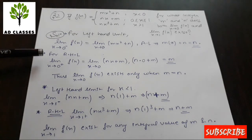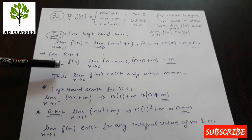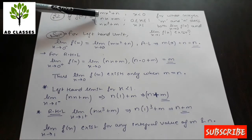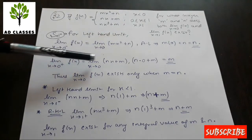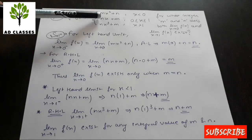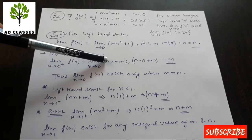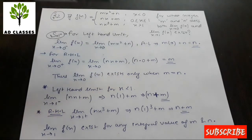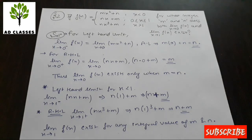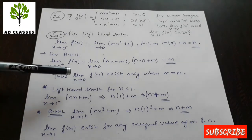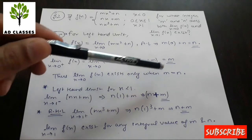For the Right Hand Limit at x = 0, we use the second piece (nx + m). Applying limit x → 0 gives nx → 0, so RHL = m. For the limit at x = 0 to exist, LHL must equal RHL, so the limit at x = 0 exists only when m = n.